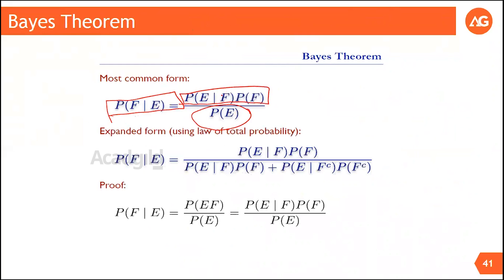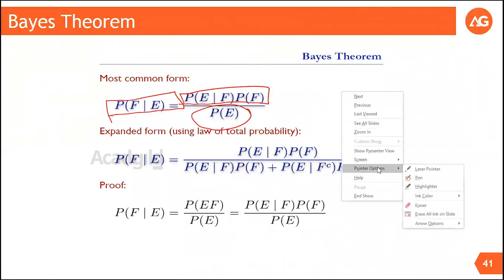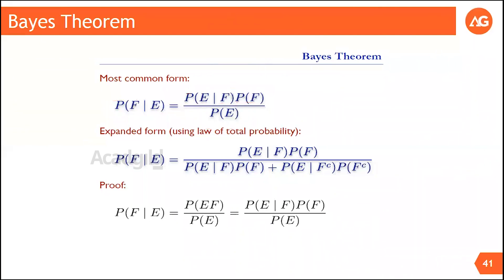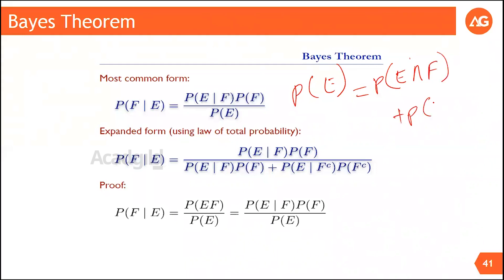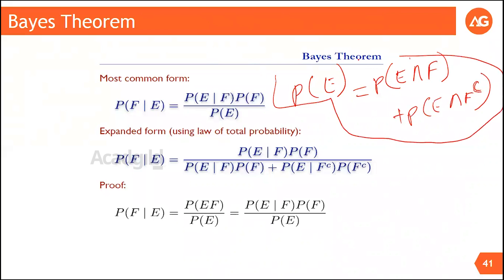There is another rule in probability that will help us expand the denominator — it's called the law of total probability. When we say the probability of occurrence of an event, it equals the probability of that event intersection another event that has occurred, plus the probability of that event intersection that other event not having occurred — the complement, written as F superscript C or F dash.